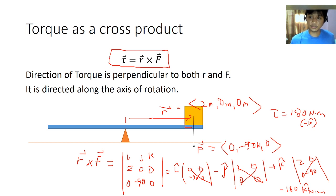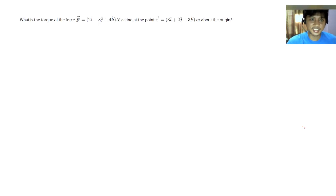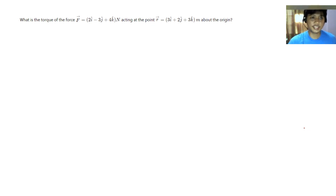The torque is negative because, as you can see, it makes the seesaw rotate clockwise. I am going to leave the remaining problems as a real-time discussion, but if you want to answer them for practice, you may.